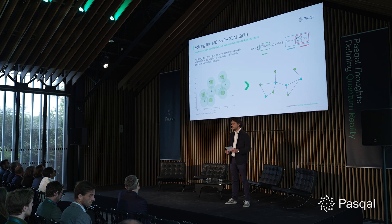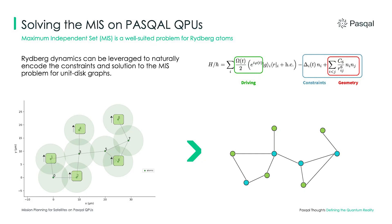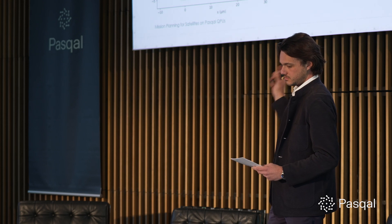As an example, this is the embedding of a random graph on the left into a quantum register on the right, where each individual dot represents a single atom trapped in an optical tweezer. Once we have prepared our quantum register, Rydberg dynamics can be leveraged to naturally encode the constraints of the problem and evolve the system towards a solution. After our quantum program, the state of the system represents a maximum independent set of the graph, shown with the colored nodes.